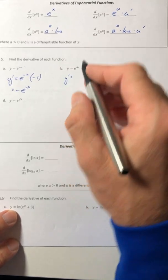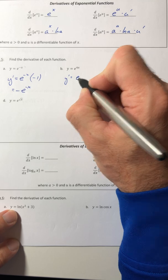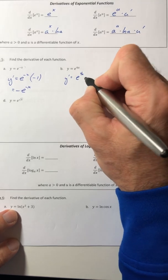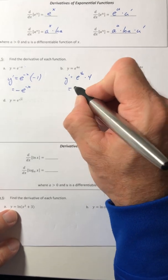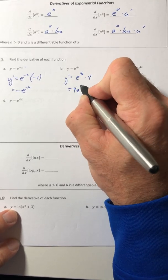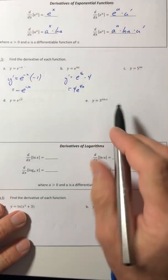Still exponential, so just rewrite the function, multiply by the derivative of the exponent, and there you go.